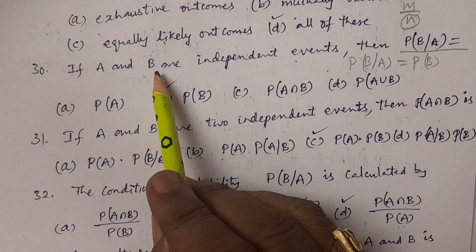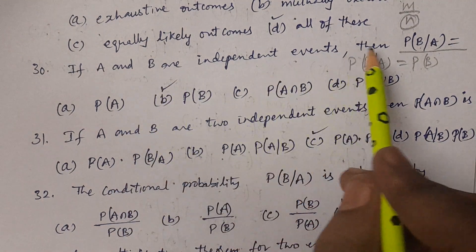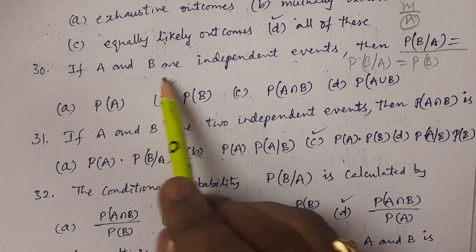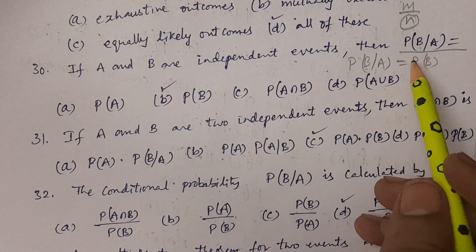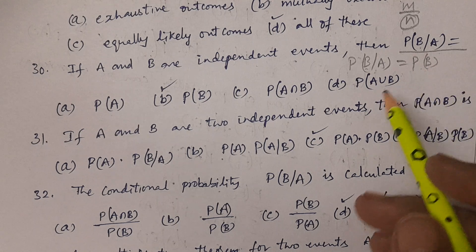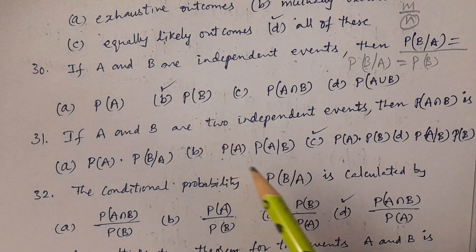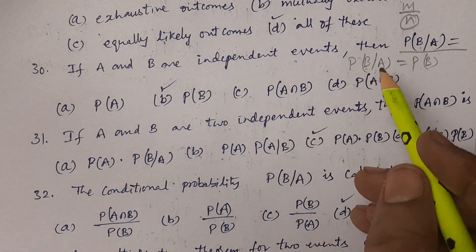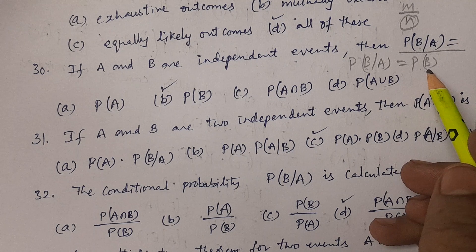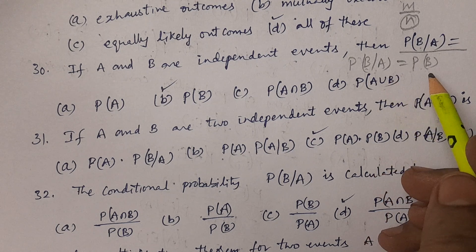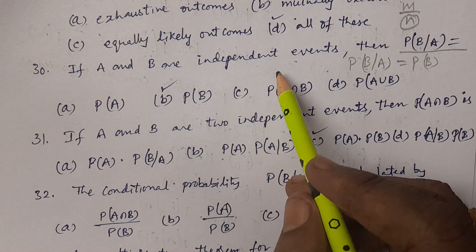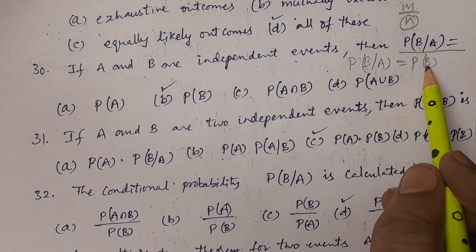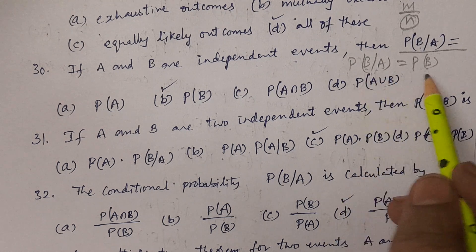If A and B are independent events, then P(B|A) is equal to probability of B. The definition states that unconditional probability and conditional probability are equal for independent events.